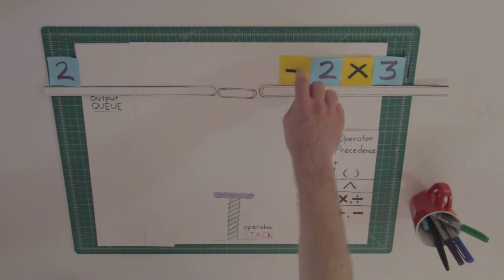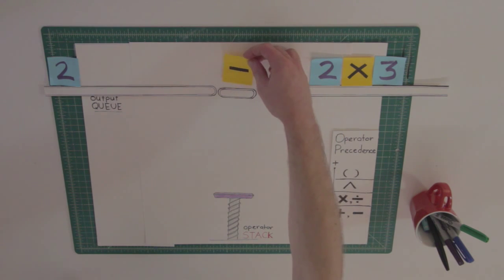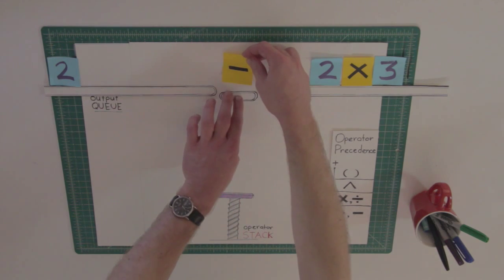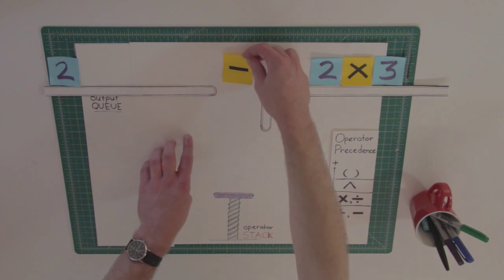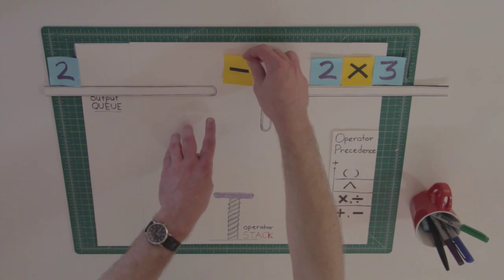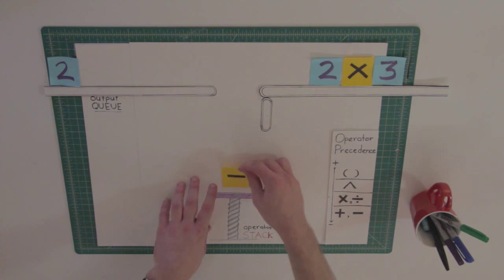Now we read the next token from the input. Is the token a number? No, then it is an operator. And we must check — compare it with the operator at the top of the stack. Since there are no operators, we can just push it.